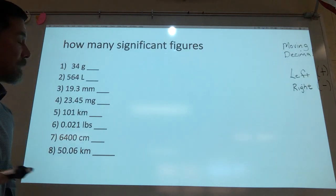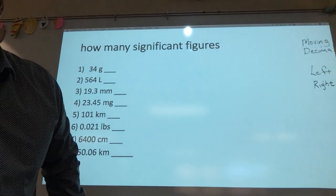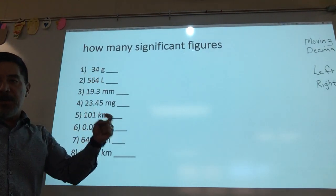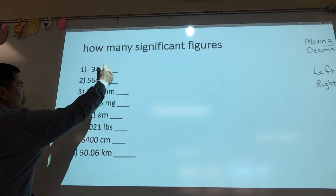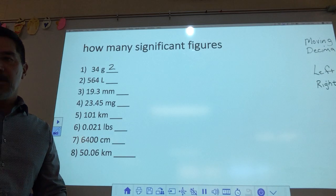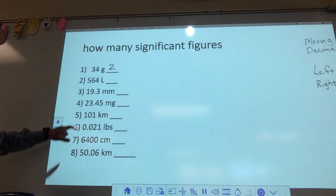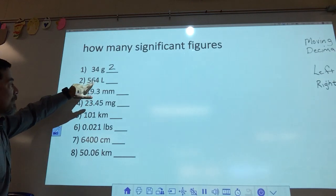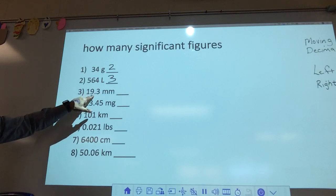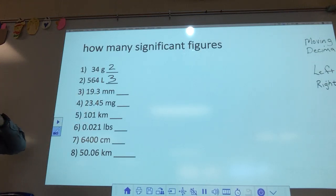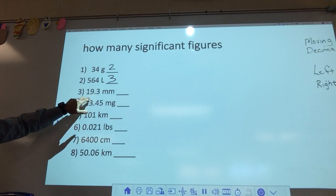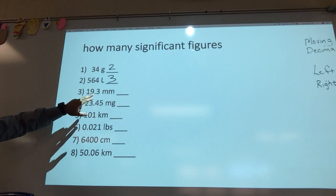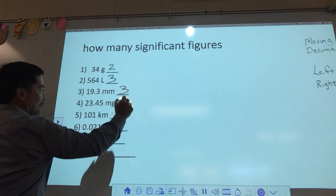Quick review. How many significant figures are in 34? The 3 counts — it's non-zero. The 4 counts — it's non-zero. There are 2. How about 564? They all count, so that would be 3. How about 19.3? The 1 and the 9 count, and the 3 after the decimal counts as well. Even though the decimal is there, don't get confused — it's a non-zero number. It counts.